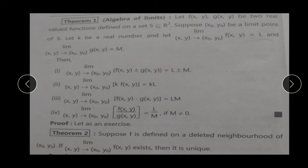Simply यहाँ पर अगर हम दो functions को add या subtract करेंगे और उस पर limit apply करेंगे तो वो equal रहेगी उन दोनों functions की limits के addition और subtraction को. अगर किसी scalar से multiply करेंगे तो वो equal होगी k into limit. Similarly multiply करेंगे तो limits multiply होंगी और divide करेंगे तो limit भी divide होगी. This proof is left as an exercise, क्योंकि already आपने ये proof study किया हुआ है — वहाँ single variable था, यहाँ double variable है. So ये आपका homework है.